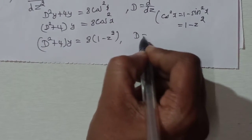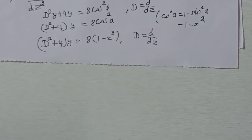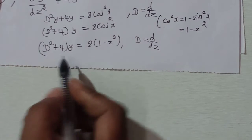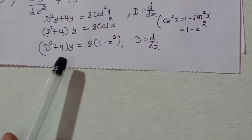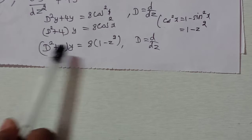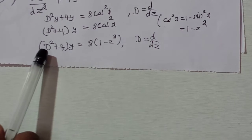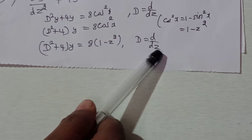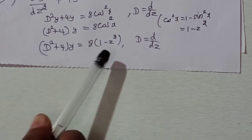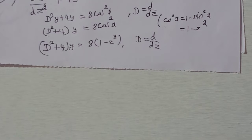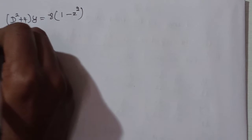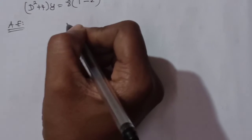Here y is the dependent variable, D = d/dz, and z is the independent variable. The solution is y in terms of z. The right-hand side is a function of z, so we find the complementary function and particular integral. We solve the auxiliary equation.